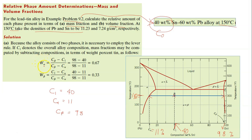This is the lever rule formula to calculate the fraction of the alpha phase. The fraction of alpha is (Cβ − C1) / (Cβ − Cα). Substituting all the values into this equation you get 0.67 for the alpha phase fraction. For the beta phase, using the same formula, you get 0.33. This is the answer for Part A.